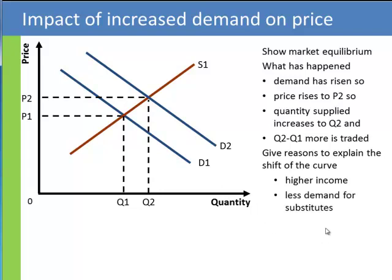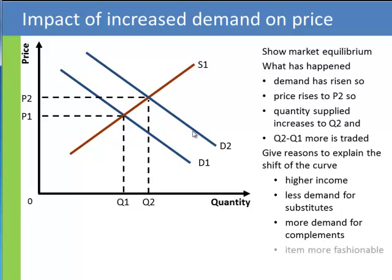Or it could be that products they could buy instead — rival items called substitutes — where there's less demand for them, so more demand for this product. Or complements — these are products consumed at the same time. Perhaps we're buying more of them, and therefore buying more of this product to go with it. Finally, it could be that consumer taste has changed, and that this item has become more fashionable.